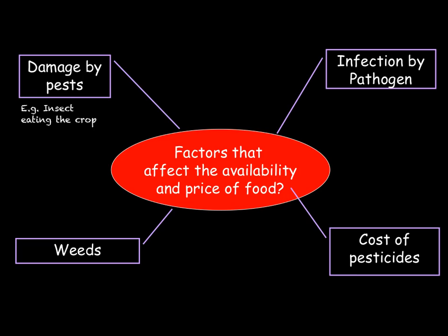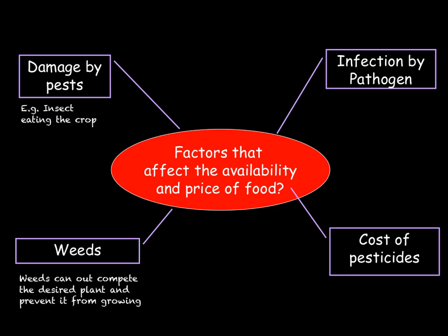For example, we can have fruit flies which eat fruit and therefore ruin entire fruit crops. We also get things like slugs and snails which will eat lettuce leaves. Secondly, we have the growth of weeds. Weeds are plants that you do not want growing in that area. Weeds that grow near the plant compete for nutrients in the soil. If the plant gets too few nutrients, it won't grow as well and the crop yield — that's the amount of crop that you get — will be a lot lower.